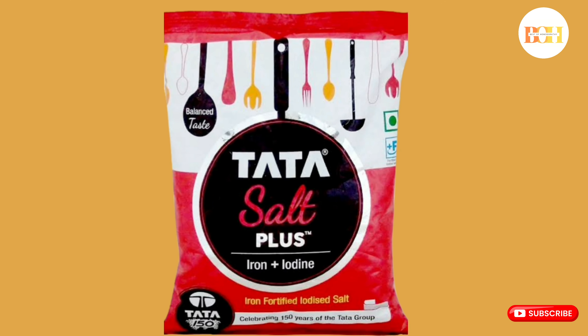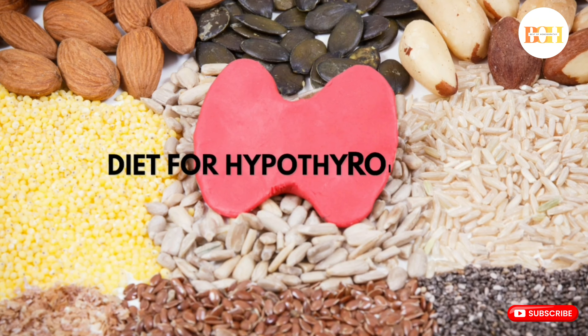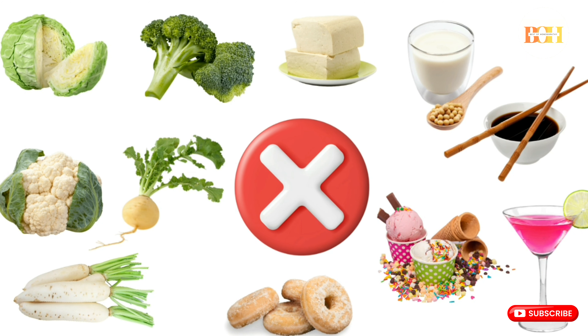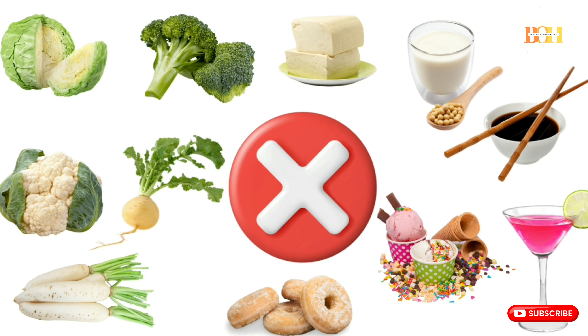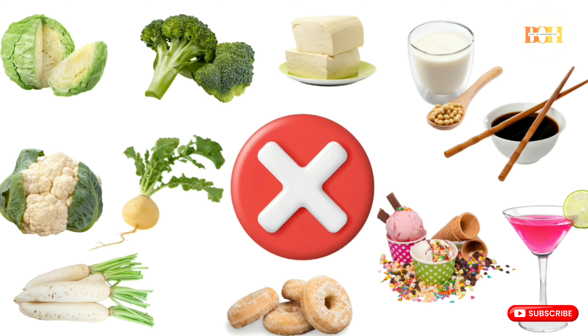To overcome this problem, the government introduced iodized salt so that every person receives the required amount of iodine and hypothyroidism could be prevented. Following a good diet is very important while treating this condition. Foods that need to be avoided include cabbage, broccoli, cauliflower, turnips and radishes, soy-containing foods like soy sauce, soy milk or tofu, processed meat, high sugar-containing foods, and alcohol.